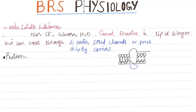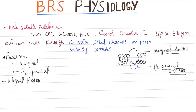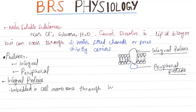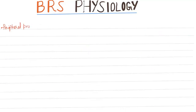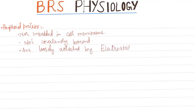Proteins are either integral proteins or peripheral proteins. Integral proteins are embedded in the cell membrane through hydrophobic interactions, and include ion channels, transport proteins, and G-protein (guanosine-5-triphosphate binding proteins). Peripheral proteins are not embedded in the plasma membrane, not covalently bound; they are loosely attached by electrostatic interactions.